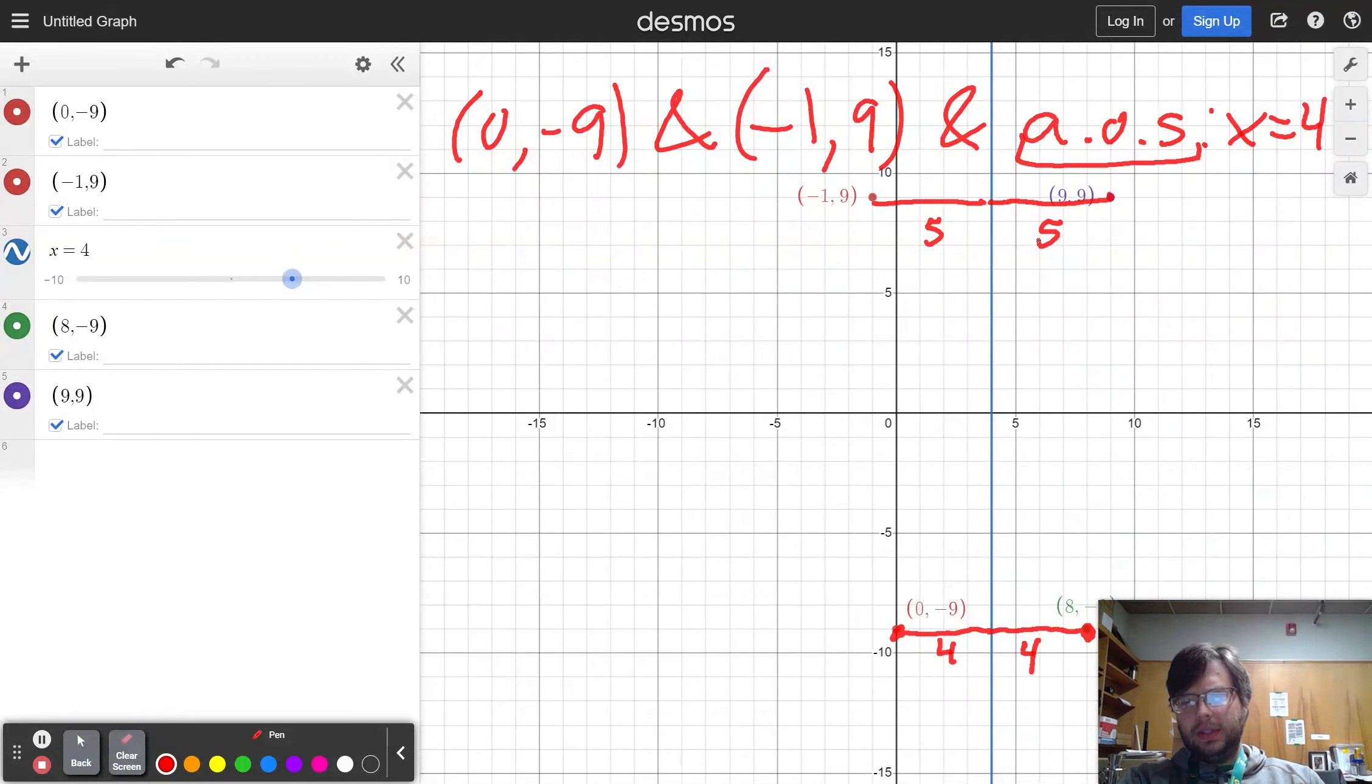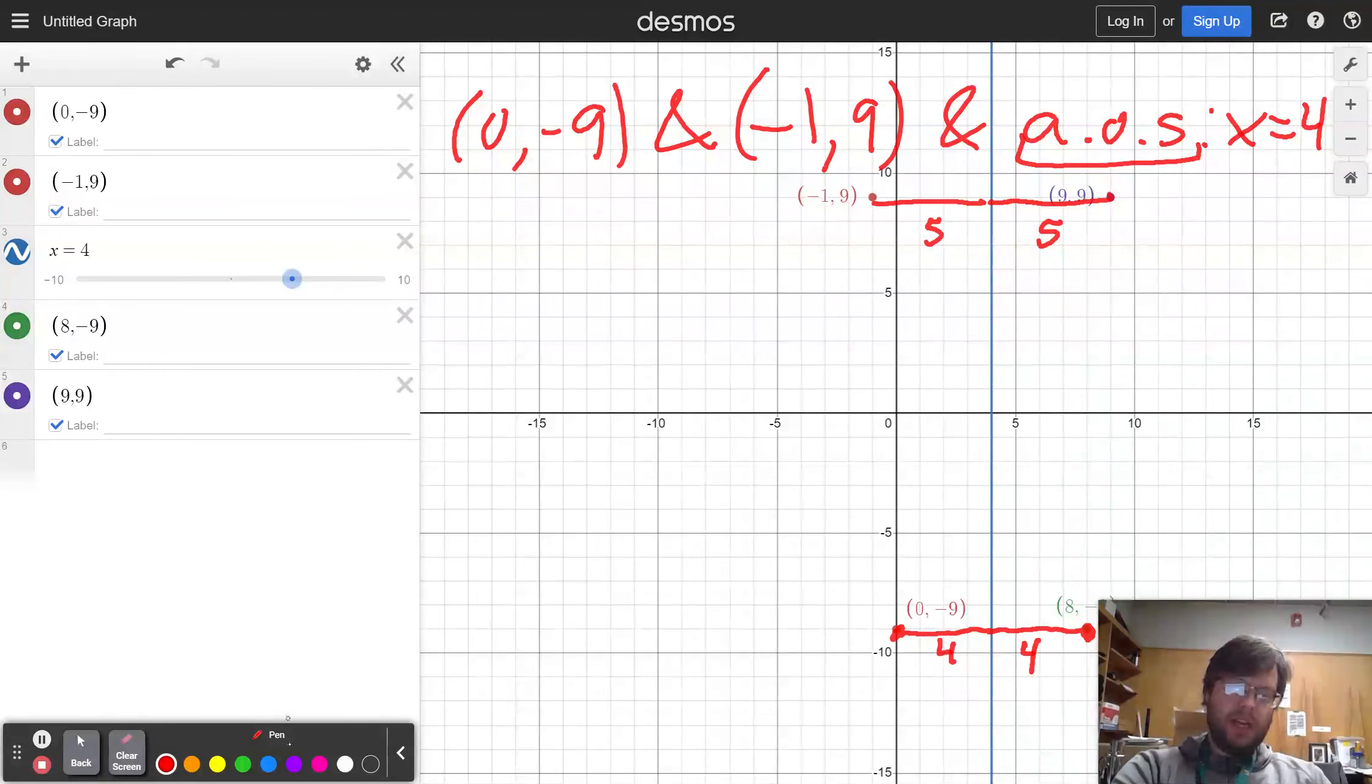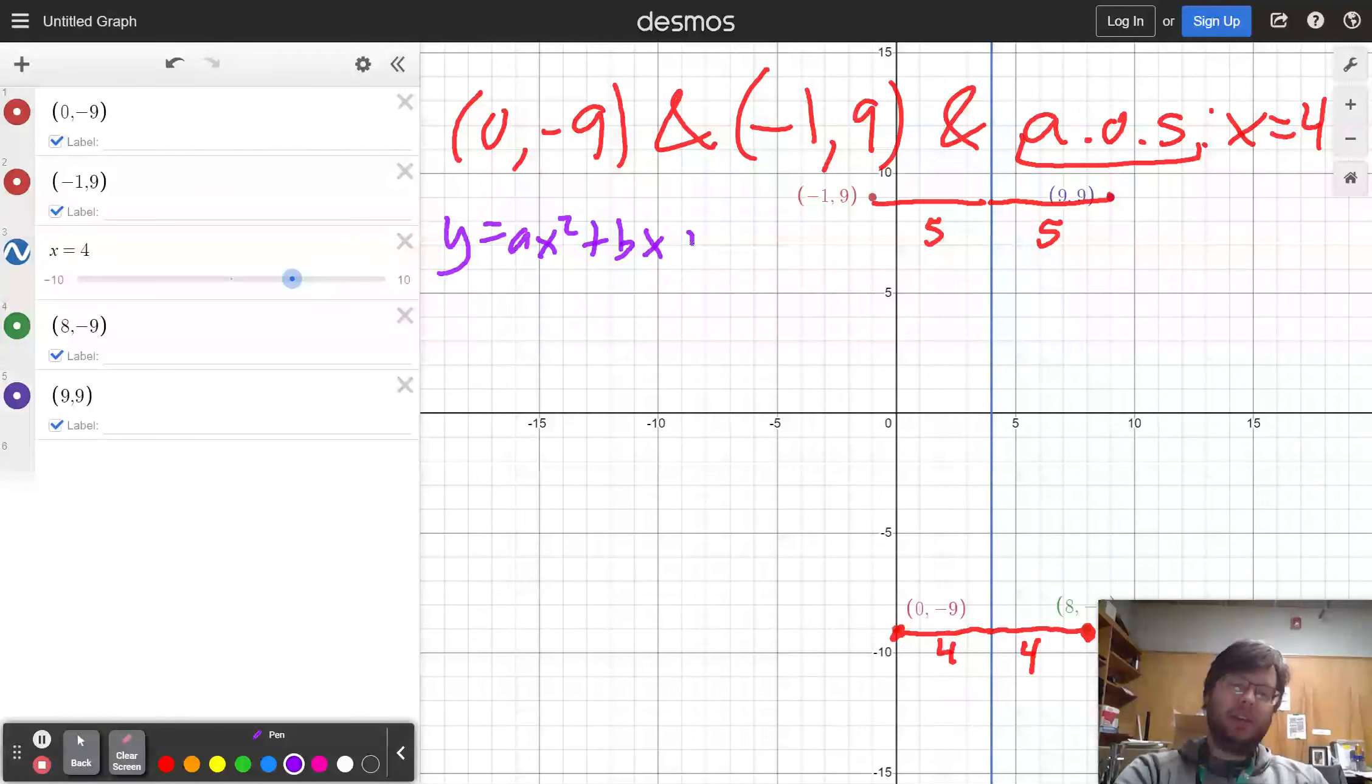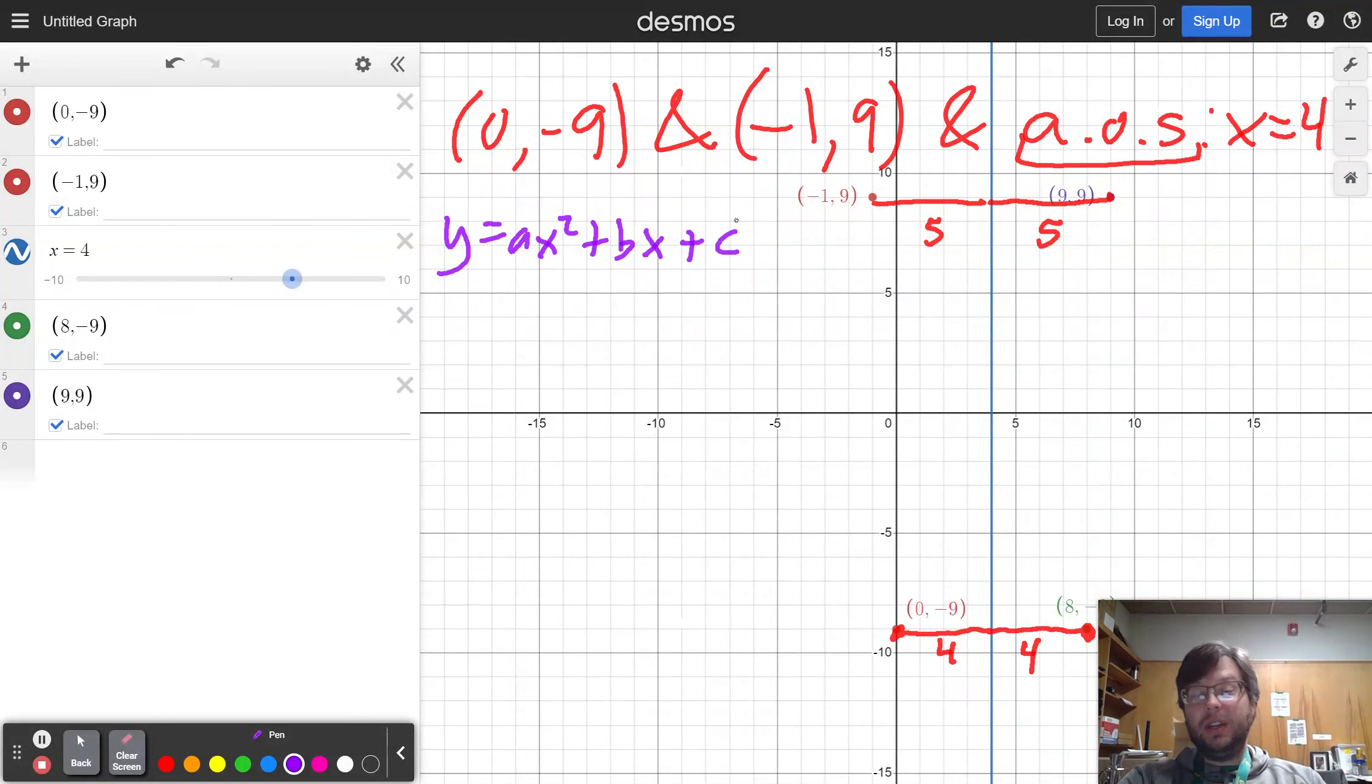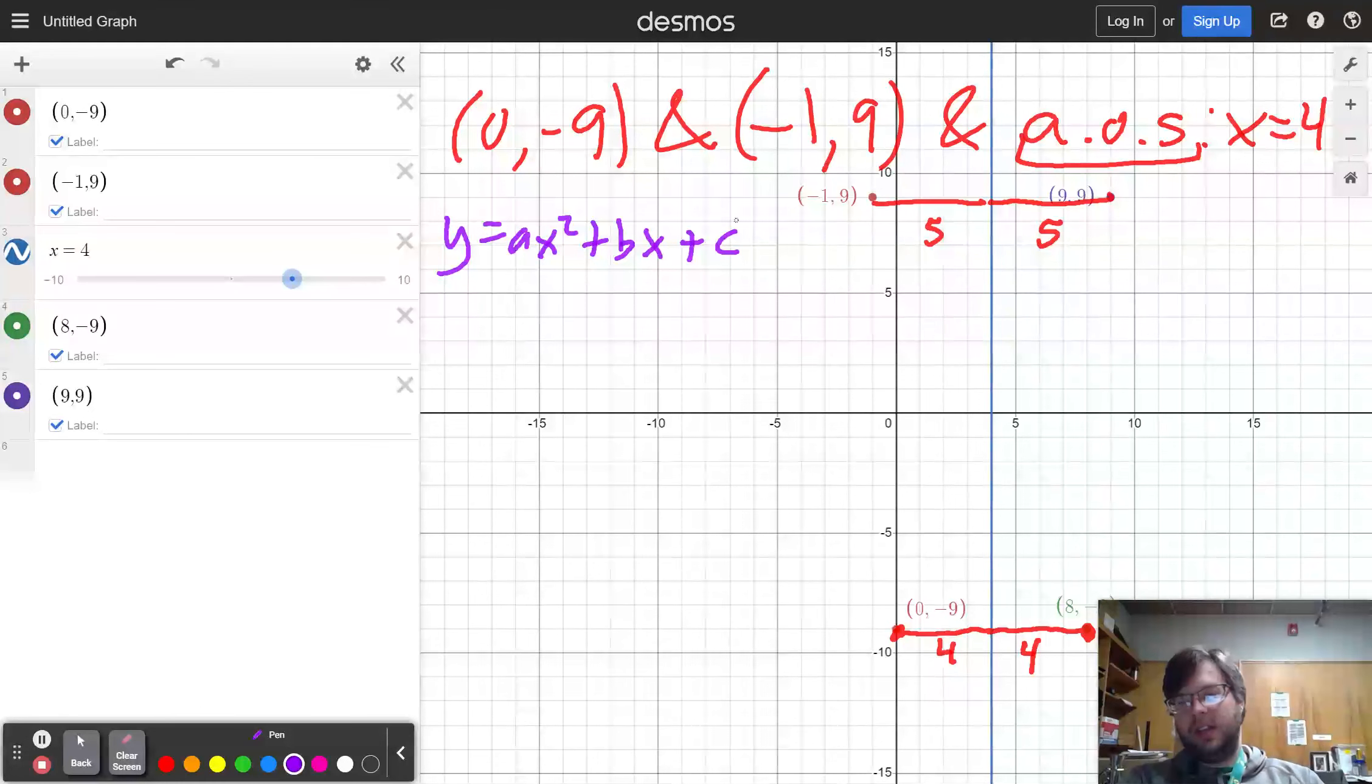But now I have four points. I still don't have an equation. So what I can do is find the a, b, and c values of my quadratic equation based on the points that I have. I really don't even need all four of them. I just wanted to show you that I could get those four.